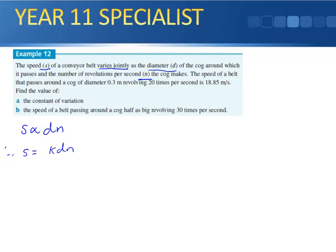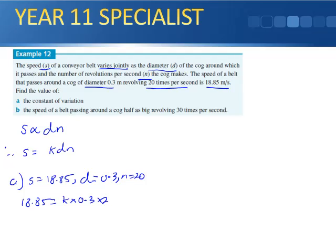Of course I've got to find my k. And it says the speed of a belt that passes around a cog of diameter 0.3 revolves 20 times per second is 18.85 meters per second. Find the value of part a, the constant of variation. So it gives us all that information. I have s which equals 18.85, I have my d which is 0.3, and I have my n which is 20 times. So when I substitute it in I get 18.85 equals k times 0.3 times 20. And when I work this out I end up getting k equals 3.142. So therefore I found my k, and my rule is s will equal 3.142 d n.